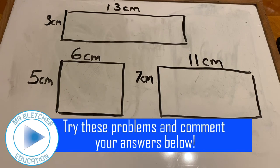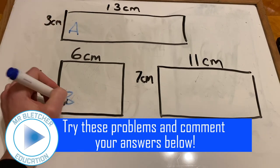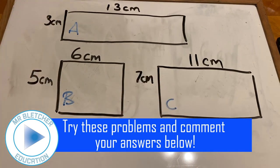If you think you know the answers, we'll call these shapes Shape A, Shape B and Shape C. Get your answers in the comments below, and let's see who the first person is to be correct.